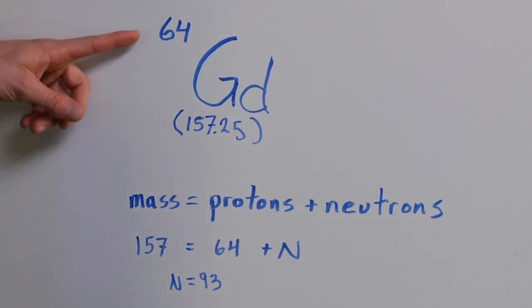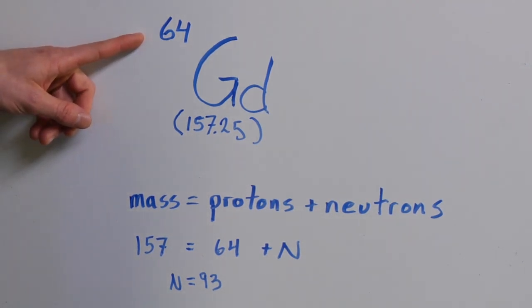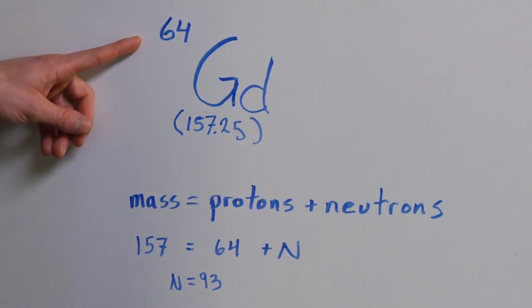First of all, the number of protons is simply the atomic number 64, so there's 64 protons. This means that there's also 64 electrons, since charges have to balance.